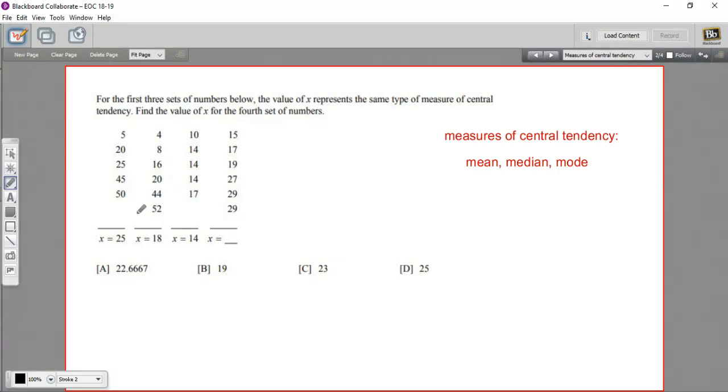So first of all, I think we can rule out mode because this set of data, while the 25 appears only once, and in fact, nothing appears more than once. So there isn't a mode here. And in this set of data, there's no 18 appearing at all. So it's definitely not mode.